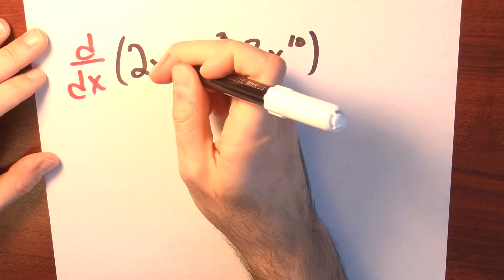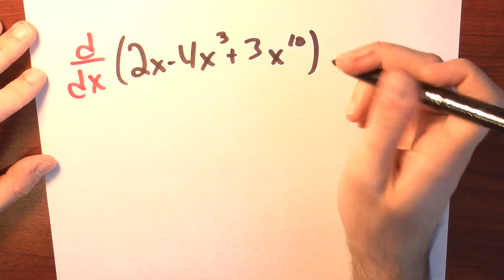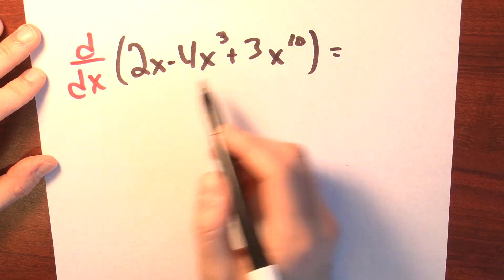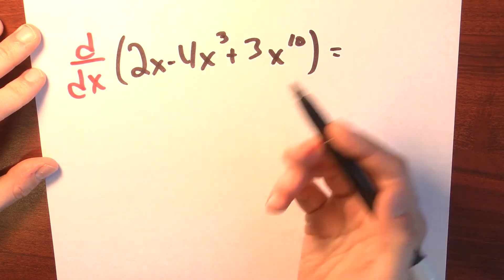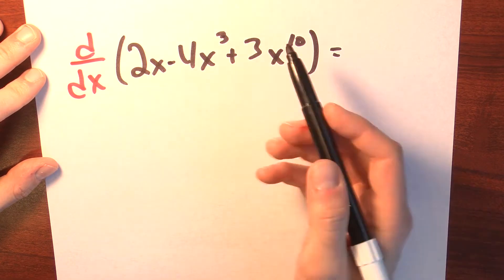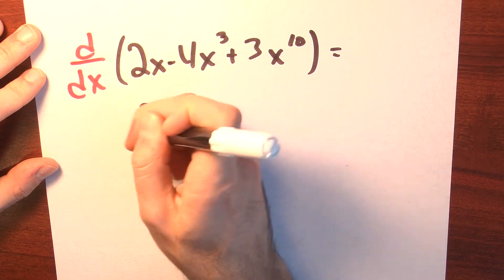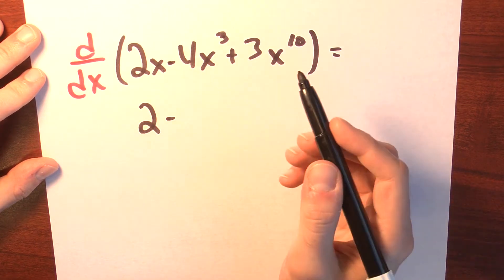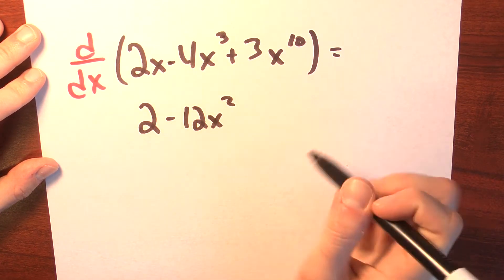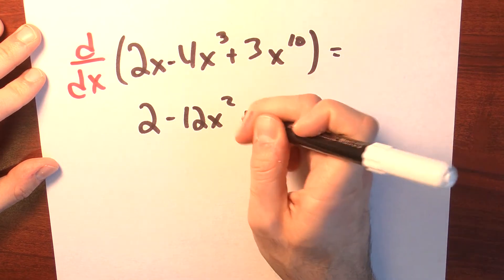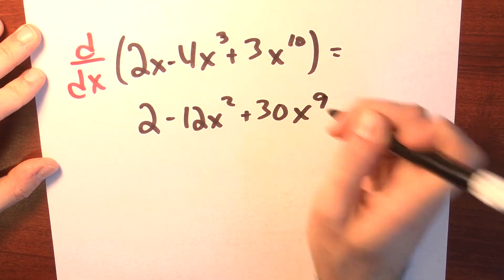all I've got to do is just remember my rules for differentiating. I differentiate these sums and differences by differentiating each term. And then I can differentiate a power just by bringing down the power and subtracting 1, right? So the derivative of 2x is just 2. The derivative of 4x cubed is 12x squared. The derivative of 3x to the tenth is 30x to the ninth.